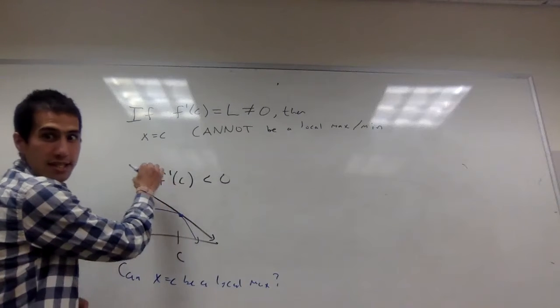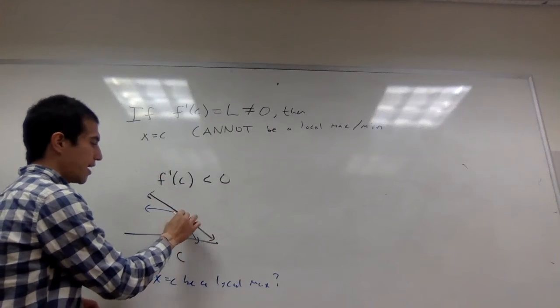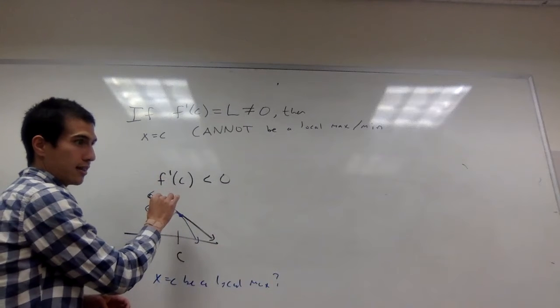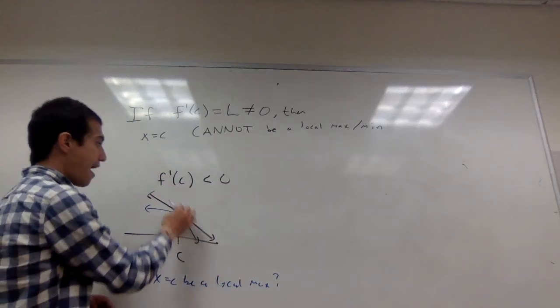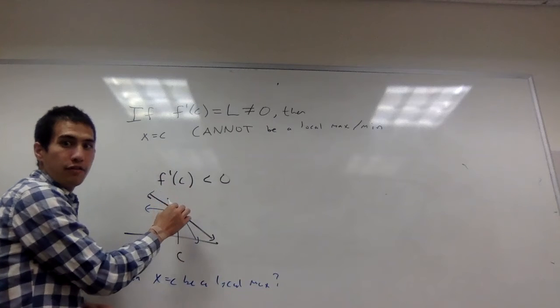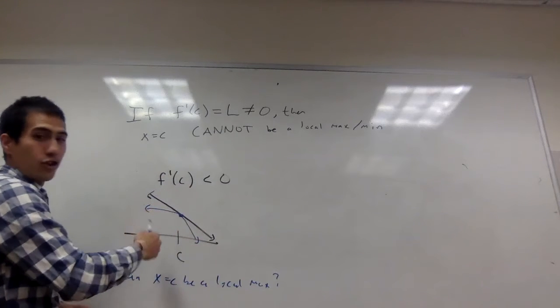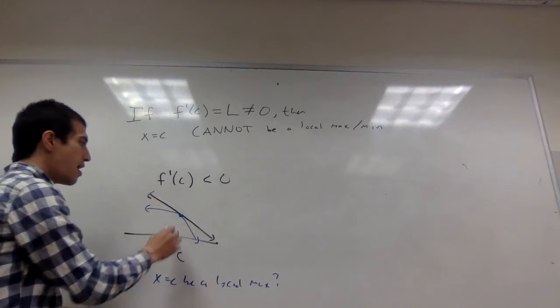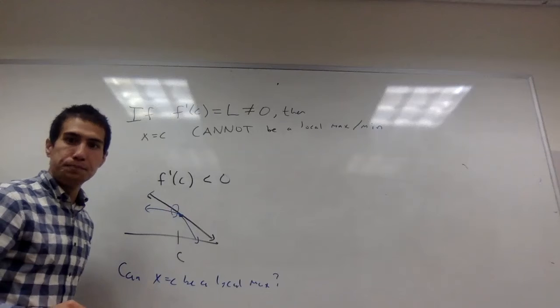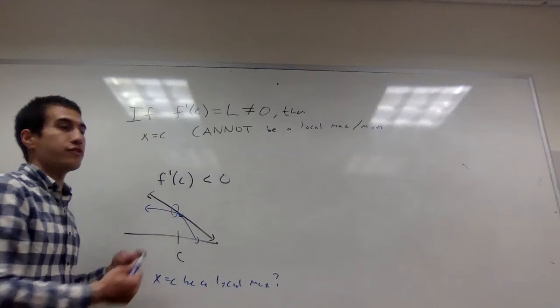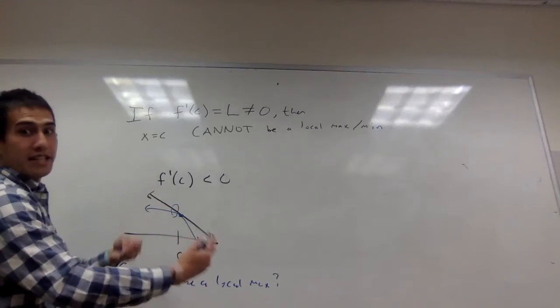Because the slope of the function is negative, right? So the function is changing in a negative way. If I look at the point at x = c, if I go to the right, then the y value is going to decrease, that's what the slope being negative means. But if I go to the left, then the value of the function is going to increase. So I'm going left, the slope is negative, and that means the value increases. And so if the value can increase, then it can't be a local max. There's a point where the function is higher, because it's increasing as I go to the left.